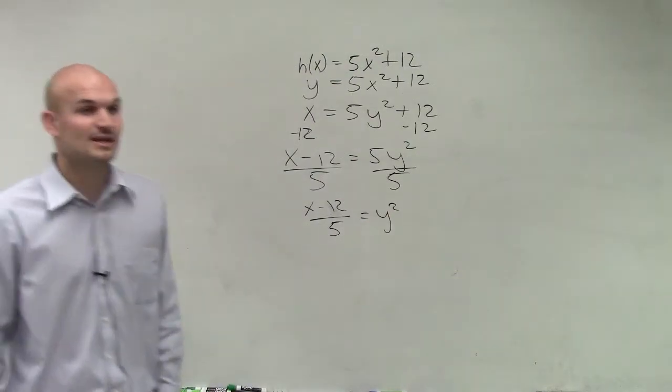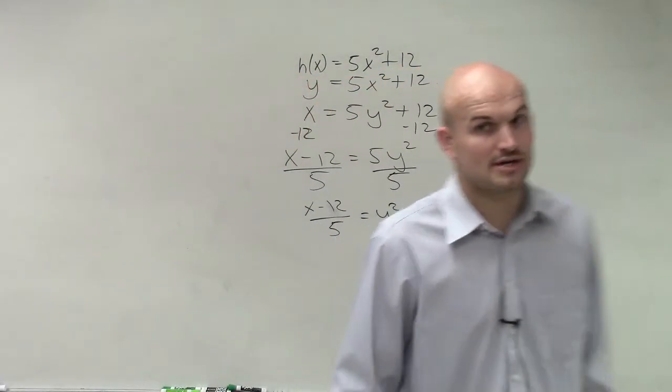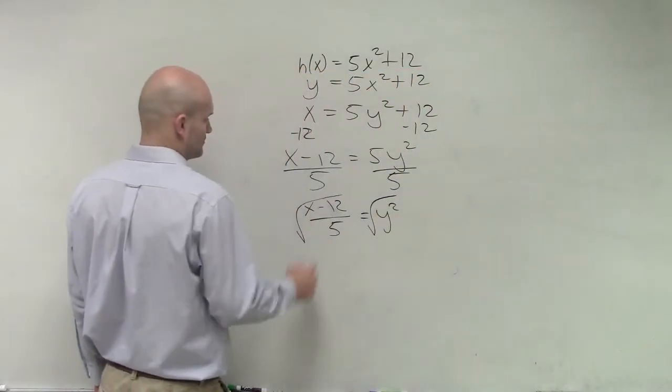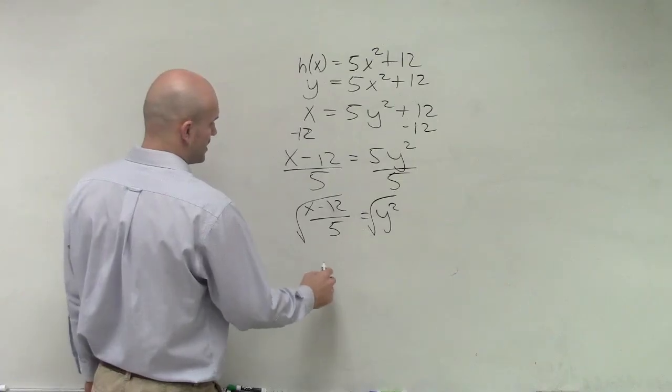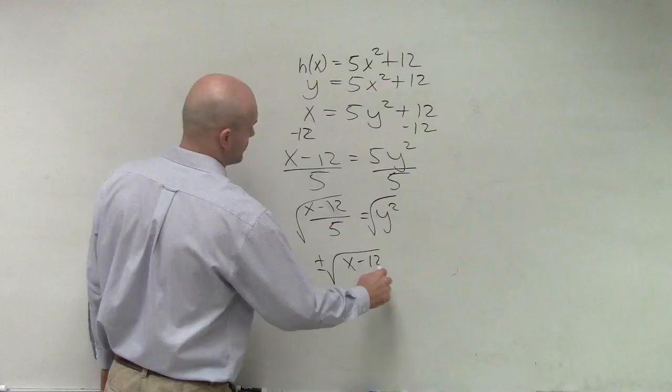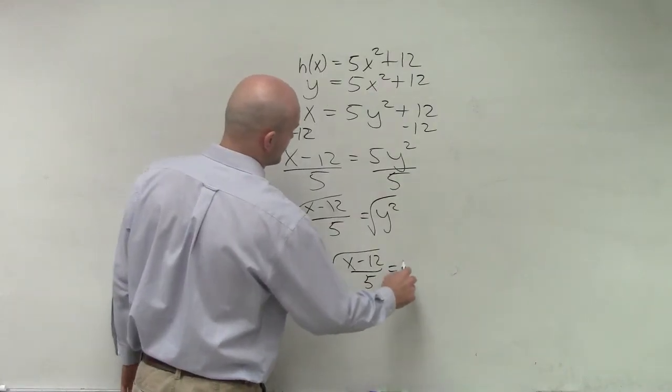Now, the next operation I need to undo is the squaring operation. To undo squaring, I need to take the square root of both sides. Therefore, I have ±√((x - 12)/5) = y.